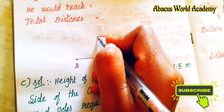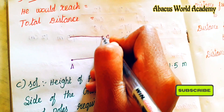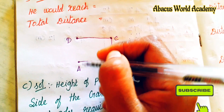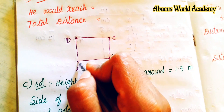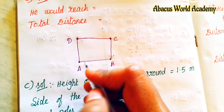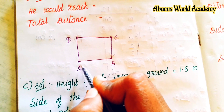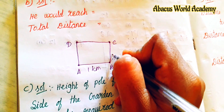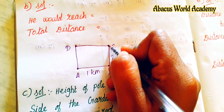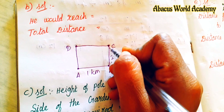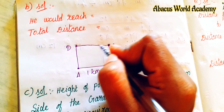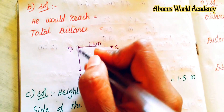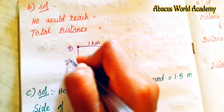Next, he goes 1 km towards west and reaches D. If he goes 2 km towards south, he would reach back towards A. The diagram shows a rectangle shape.